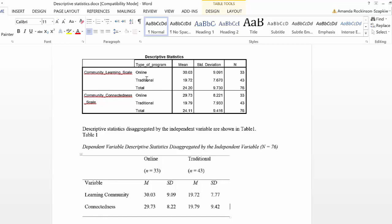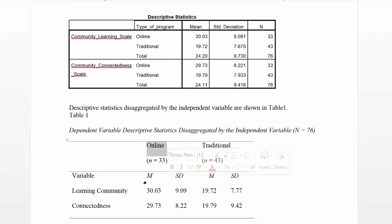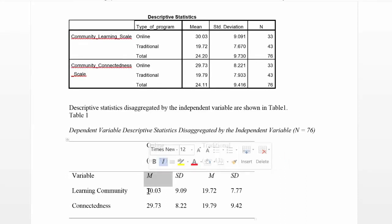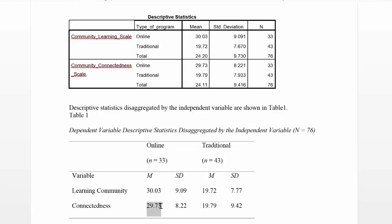As you can see, it's basically the same information. So here in the online group, I have reported the mean — the M — for learning community as well as connectedness, and then the standard deviations for those, and then the traditional group. Because remember, we need to report the means and standard deviation for each dependent variable disaggregated by the independent variable.